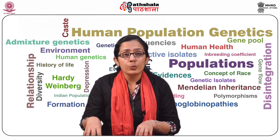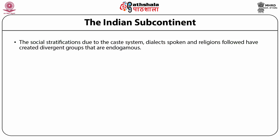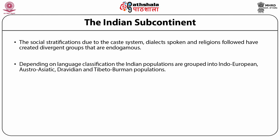Middle and upper Paleolithic tools of around the same time were also found in India. The social stratification due to the caste system, dialects spoken, and religions followed have created divergent endogamous groups. A large chunk of the population follows the Hindu religion, which divides society into four castes with further subdivisions. About 8% of the population is constituted by tribal groups.